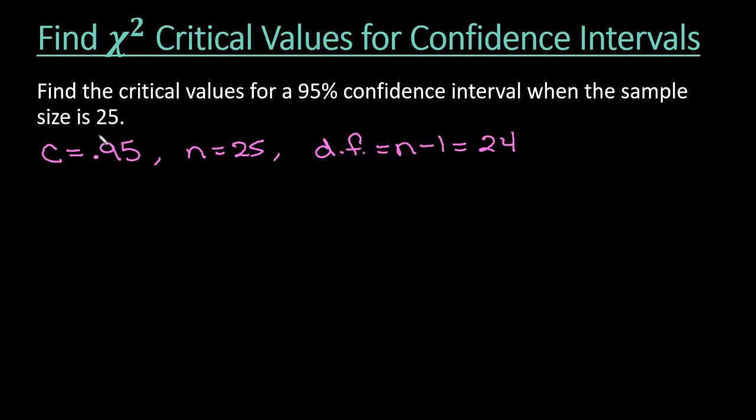So when we are going to our table, we need to know our area to the right of both of our critical values, and we need to know our degrees of freedom. So if you recall, a chi-square distribution is not symmetric.